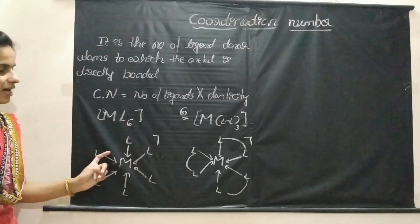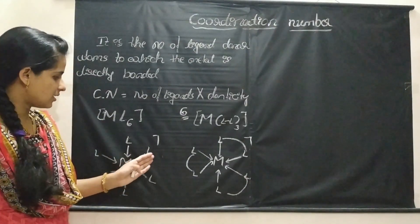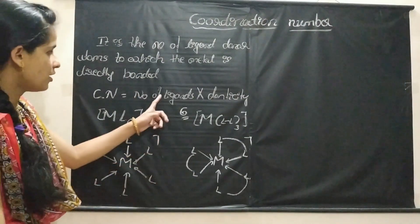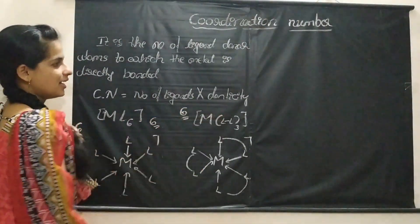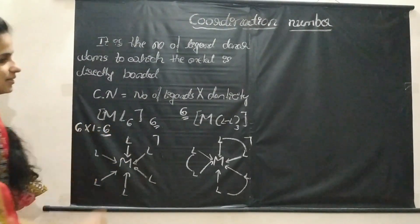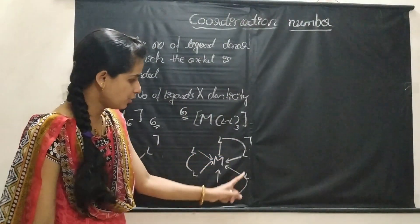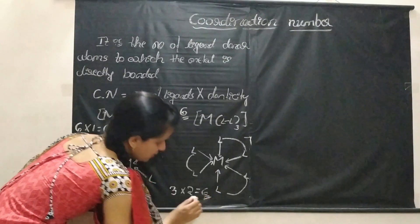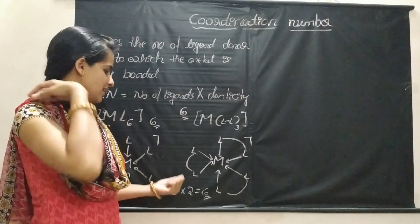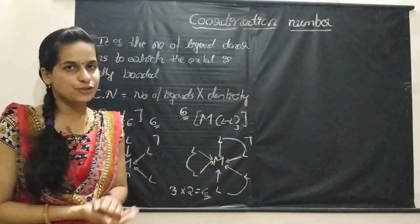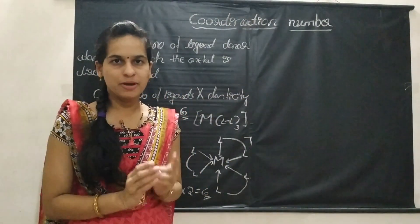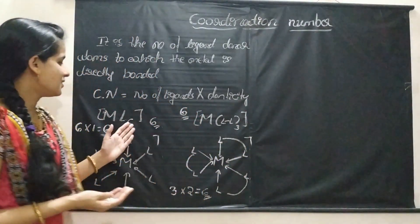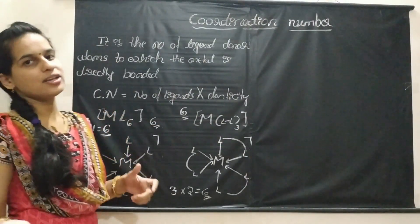In ML6, there are 6 monodentate ligands and the metal is attached to all 6 donor atoms, so coordination number is 6. Using the formula: for ML6, number of ligands is 6 multiplied by denticity 1, equals 6. For M(LL)3, number of ligands is 3 multiplied by denticity 2 (didentate), equals 6. So for calculating coordination number, remember that coordination number and number of ligands may or may not be equal. Here, 6 and 3 are the number of ligands, but in both cases coordination number is 6.